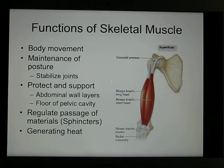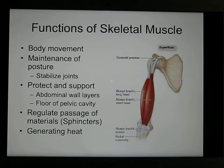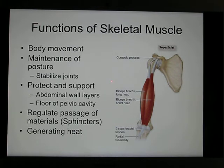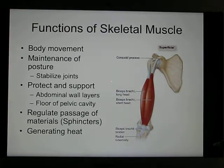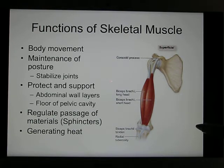These slides tell you the muscles' functions, including movement, maintaining posture — muscles help hold the bones together to maintain posture — stabilizing joints, and also protection, like your abdominal cavity. There is no bone there, all they have is layers of muscle.